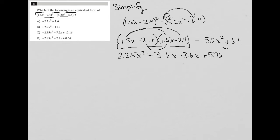And again, just bring these guys down. So minus 5.2x squared and plus 6.4. So I'm going to combine like terms now.